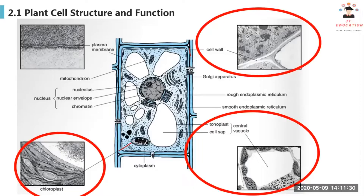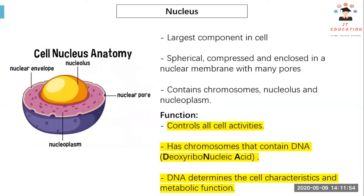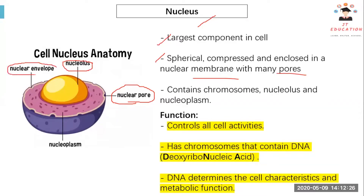Chlorophyll — in Chinese we call it 叶绿素 (ye lusou). It's very important for photosynthesis. And then we have the vacuole. So let's look at the first organelle, which is the nucleus. The nucleus is enclosed in a nuclear membrane with many pores, called nuclear pores. We also have the nuclear envelope which surrounds the whole nucleus, and the nucleoplasm.